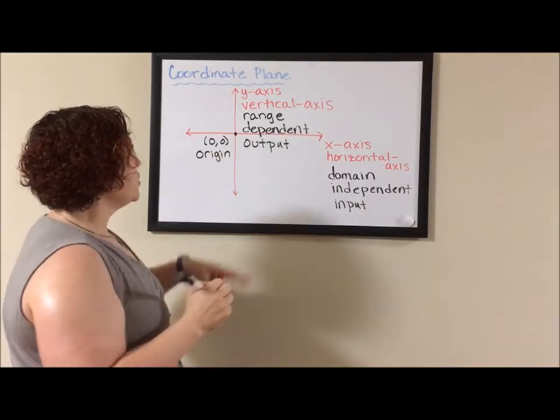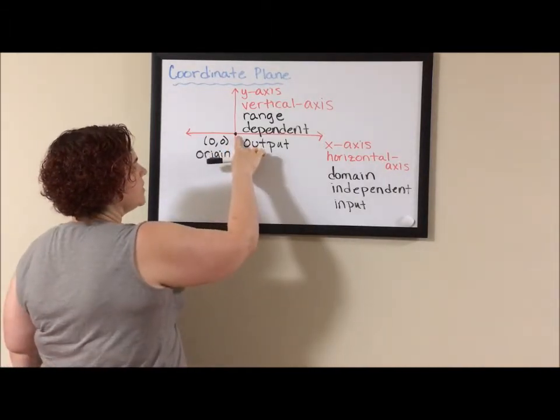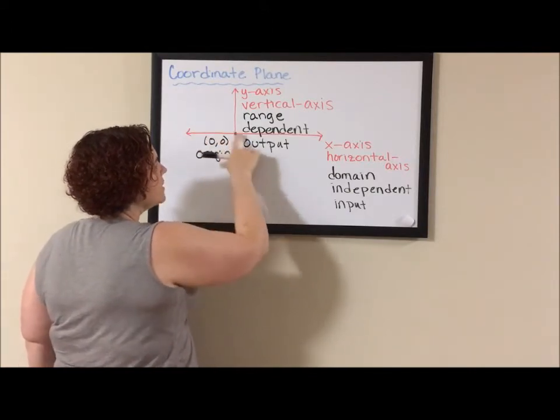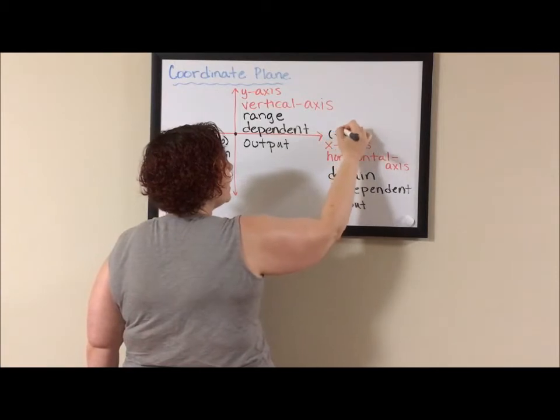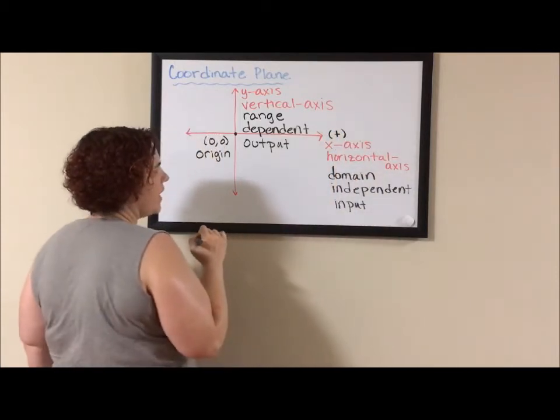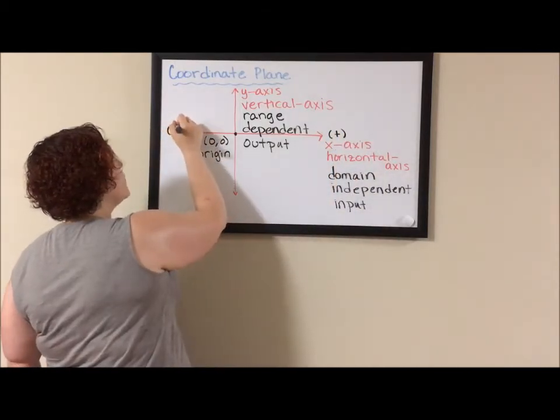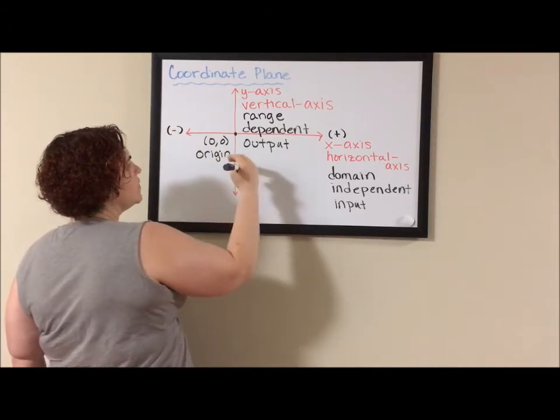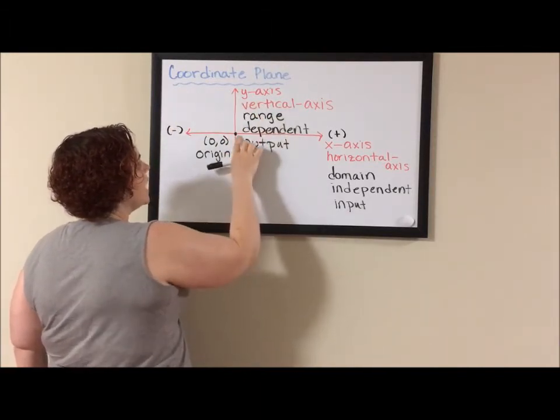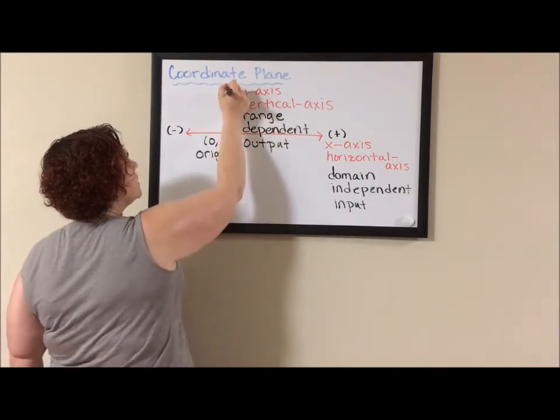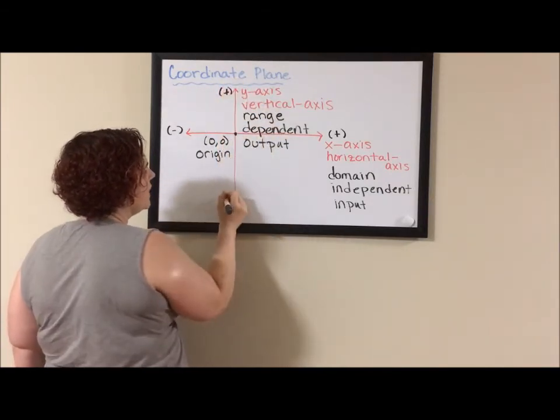Because these are each number lines and this point is the zero point on the number line, on the x-axis, on our horizontal axis, coming out this way, we have our positive values and going back, we have our negative values. Likewise, because of this being the zero point in our vertical axis, as we go up from zero, we get positive and as we go down from zero, we get negative.